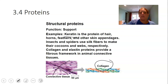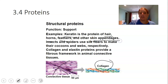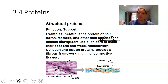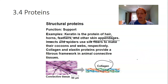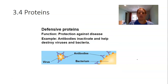Keratin is another structural support protein found in hair, horns, and feathers. Insects and spiders use silk fibers — also made of proteins — to make cocoons and spider webs. Structural proteins are another important function of proteins, showing the wide variety of roles proteins play.